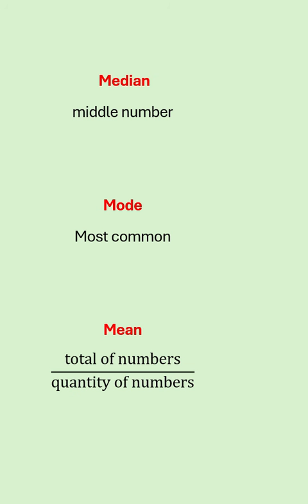In statistics the median is the middle number, the mode is the most common value, and the mean is when you add up all the numbers and divide by the quantity of numbers.